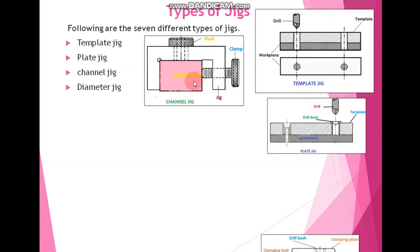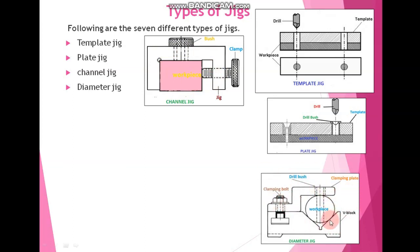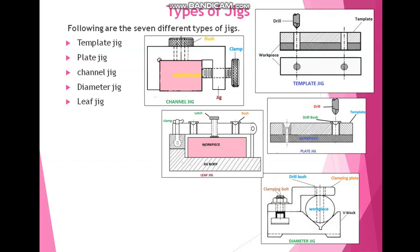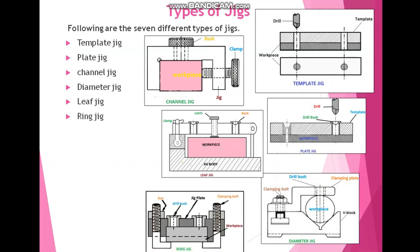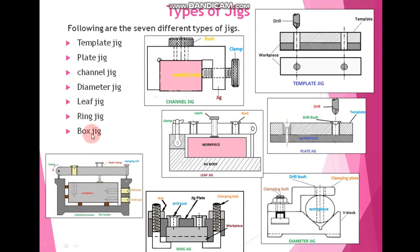Then we have the diameter jig. This diagram represents the diameter jig because it will hold or locate a diametrical workpiece inside it — that is why it is called a diametrical jig. Then we have the lip jig — this diagram represents the lip jig. Next, we have the ring jig — this diagram represents the ring jig. Last, we have the box jig. This diagram represents the box type of jig. It is called a box jig because the workpiece is mounted in a box-type structure for doing any operation. In total, we have seven types of jig.